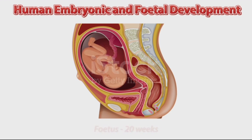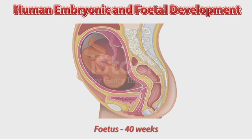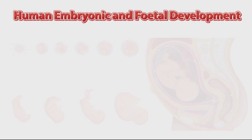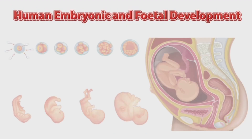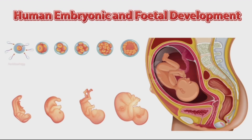At 40 weeks, the fetus looks like this and complete formation has occurred. After 40 weeks, birth can occur. This is the complete week-by-week development of the fetus during pregnancy. For further information, please subscribe to my YouTube channel.